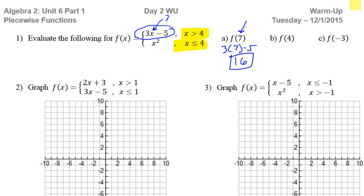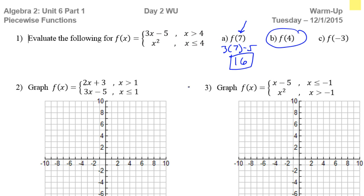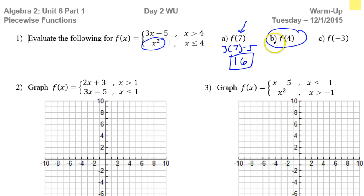How about the next one? If x is 4, are we going to use the top or bottom function? Malik says the bottom one — that's correct. Because of the 'equal to': we use the bottom function if x is less than or equal to 4, and it equals 4, so we use the bottom. The bottom function is x squared, so that means 4 squared — same answer, 16.